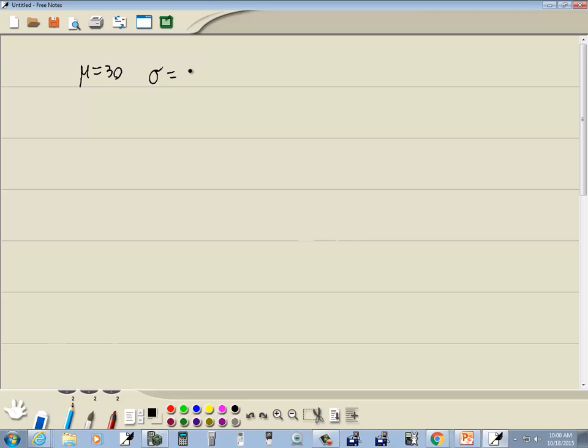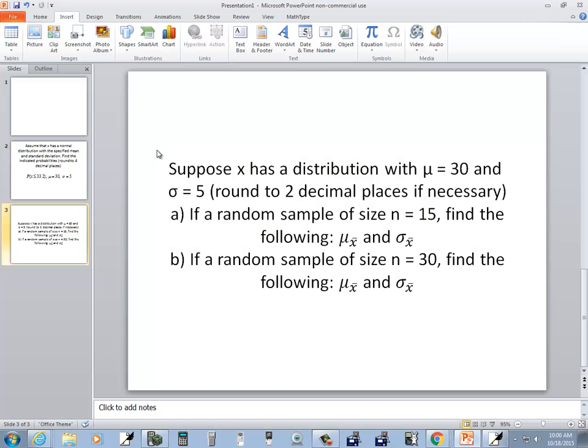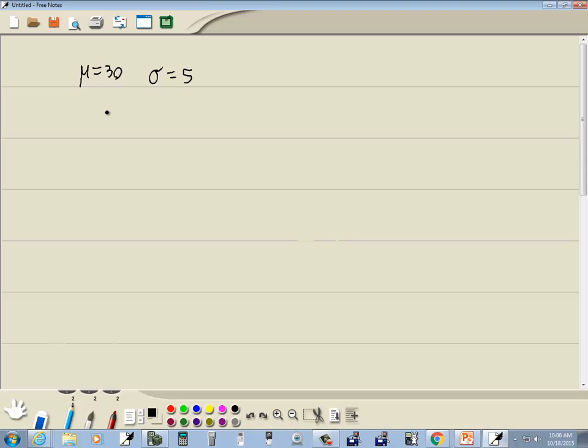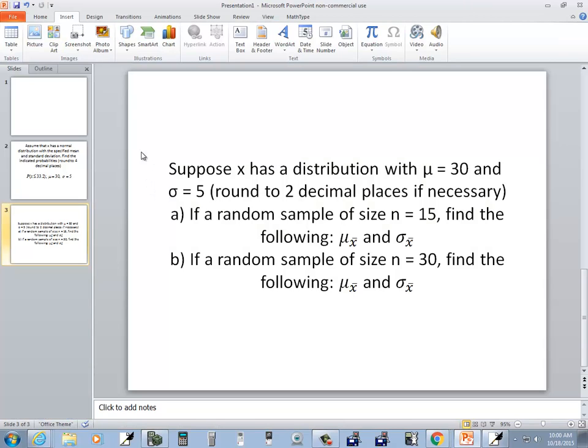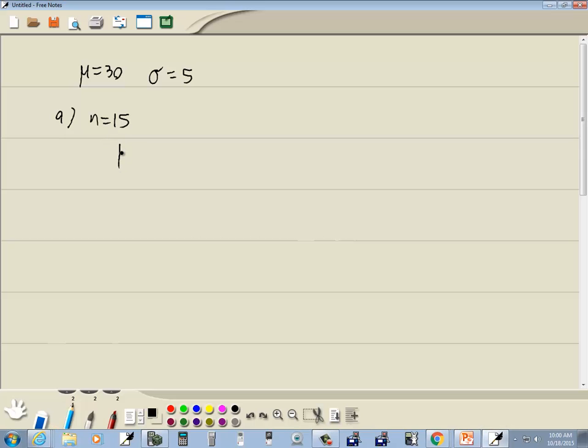Sigma is equal to 5. Okay, if a random sample of size n equals 15, this says find the following. So mu sub x bar. Now mu sub x bar is going to equal mu, which our mean was 30.